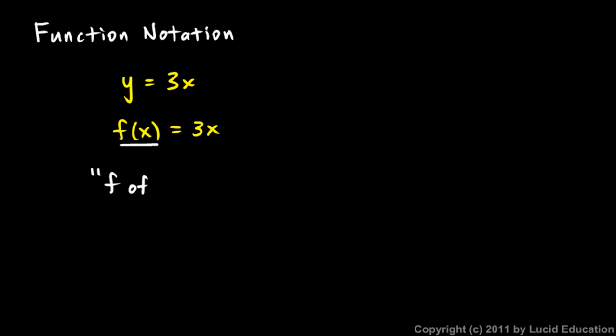When a mathematician reads this right here, he would read f of x. And in his mind what he thinks is there's a function, so let's give it a name, call it f because f stands for function. In this case it is a function of x. The value we get out depends on the value we put in for x. So it is a function of x and that's what that means, f of x. That's how they write it, f parenthesis x.